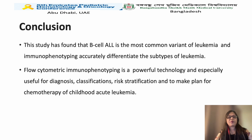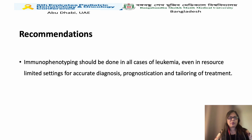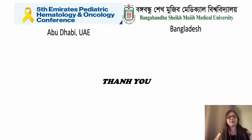This study found that B-cell ALL is the most common variant of leukemia, and immunophenotyping accurately differentiates the subtypes. Flow cytometric immunophenotyping is a powerful technology especially useful for diagnosis, classification, risk stratification, and planning chemotherapy of childhood acute leukemia. Our recommendation is that immunophenotyping should be done in all cases of leukemia, even in resource-limited settings, for accurate diagnosis, prognostication, and tailoring of treatment.